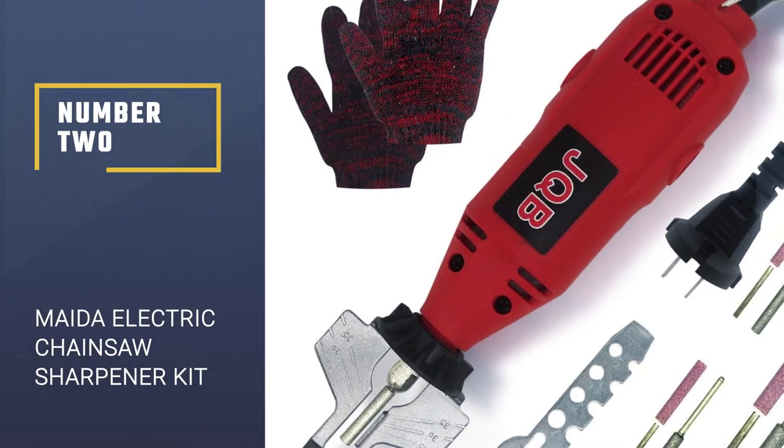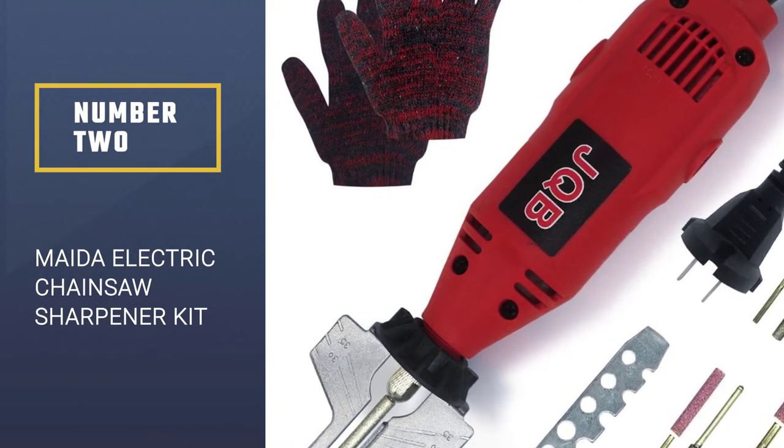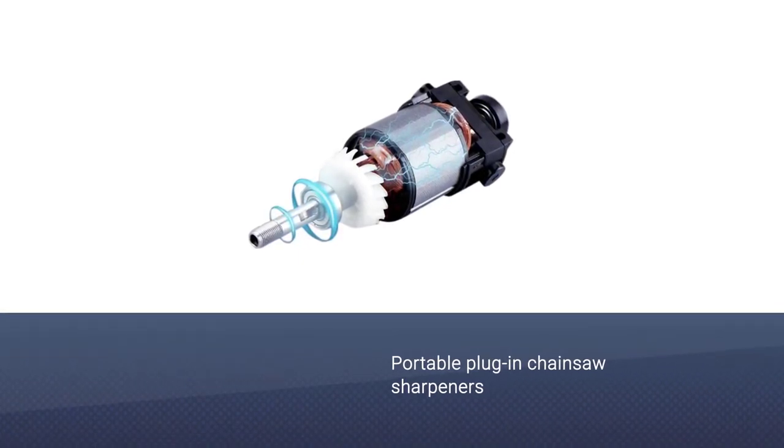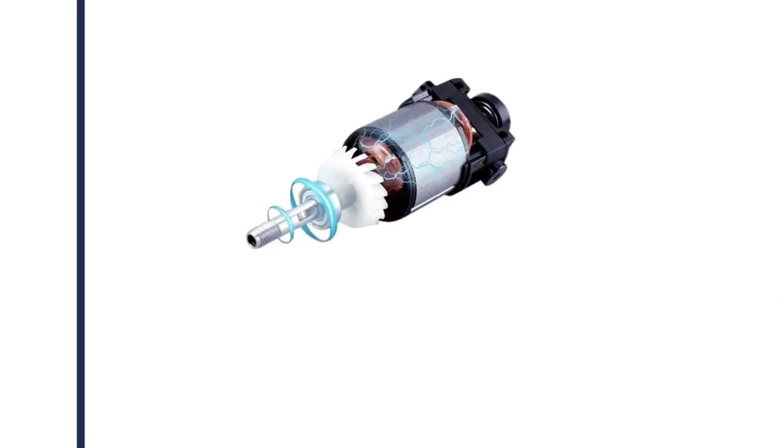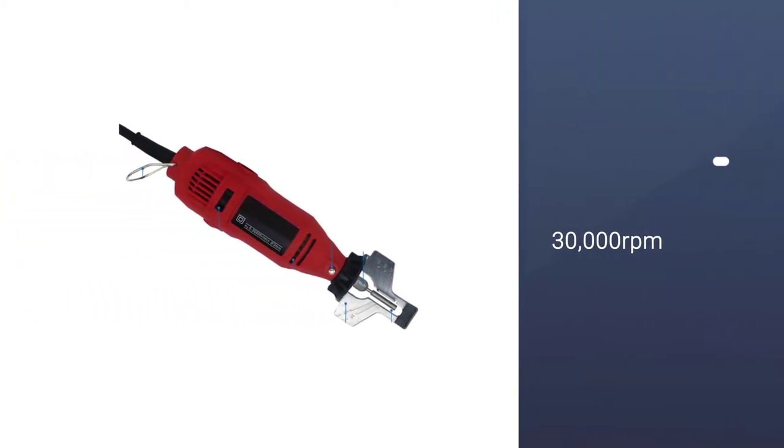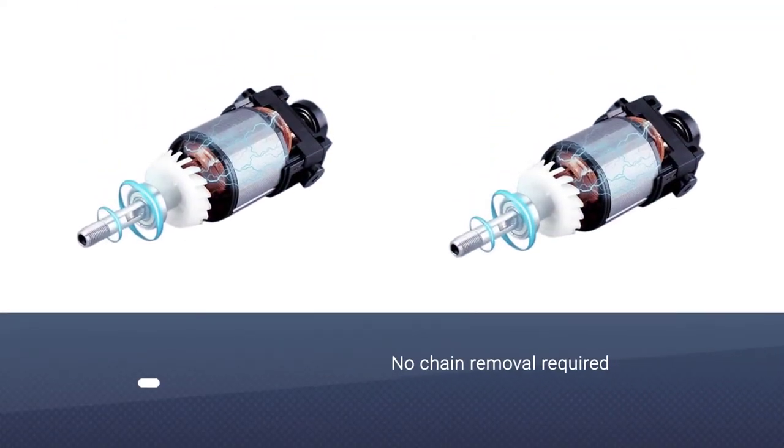Number 2. Mata Electric Chainsaw Sharpener Kit. If you are looking for a portable chainsaw sharpener, then this handheld option is worth considering. The Mata Electric Chainsaw Sharpener Kit is a compact unit that can be used anywhere providing there is a power supply and takes very little time to set up as you don't need to remove the chain from your saw before sharpening.